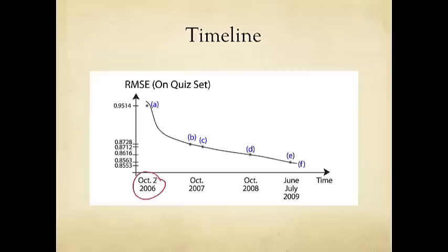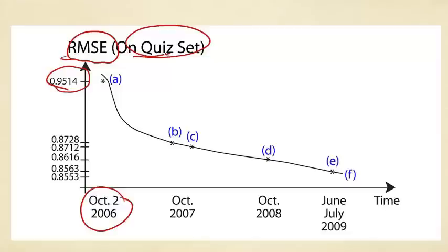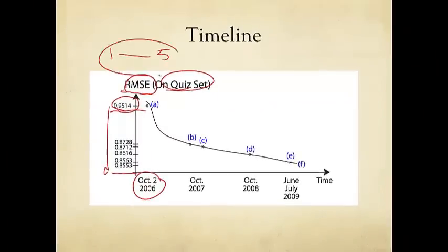Very soon — within a week — somebody was already able to beat Cinematch. But you need to beat it by 10%, so you have to push the RMSE down from 0.9514 all the way to 0.8553, to four digits of accuracy on the quiz set. The test set was reserved for the final phase. So beating Cinematch by a tiny bit on the quiz set was achievable within one week, but getting to a full 10% improvement was a much harder challenge.